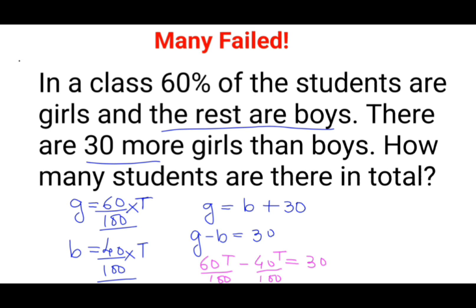Since the denominators are the same, I can directly subtract: 60 minus 40 gives 20T, still upon 100, equals 30. We can cancel — 20 and 100 simplify to 1 and 5. So T equals 30 into 5, which is nothing but 150.